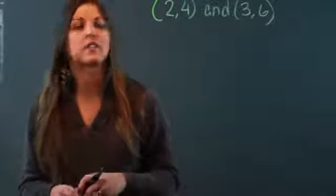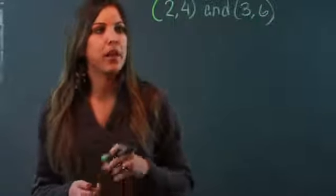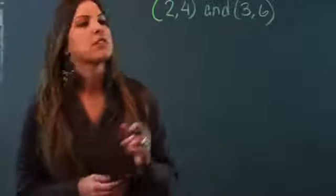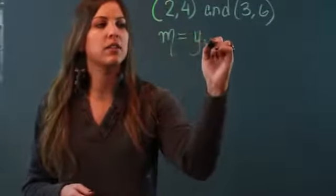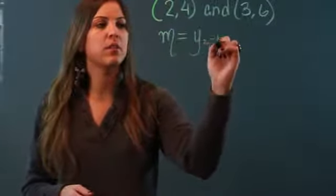First, you need to know the slope formula. So that is m equals y2 minus y1 over x2 minus x1. Now you need to label your x's and your y's so you know which are which.